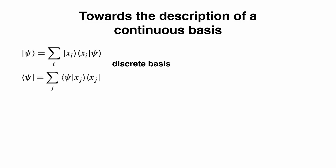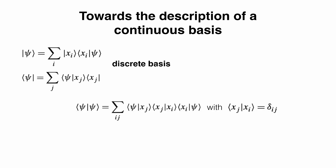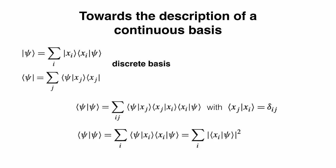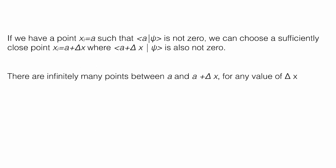That operator is Hermitian because all its eigenvalues are real. One thing that's different from what we've done so far is that the spectrum — the eigenvalues of the operator x̂ — takes continuous values between minus infinity and plus infinity. So the main question is: can we use the eigenstates of the operator x̂ as a basis?